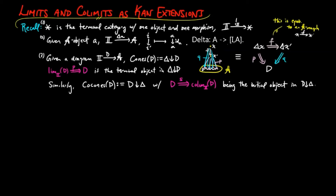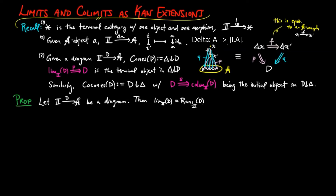We can now prove limits and co-limits are certain Kan extensions. Let d be a diagram. The limit of d is the right Kan extension of d along shriek_I, when either, and hence both, exist. And the co-limit of d is the left Kan extension of d along shriek_I, when either, and hence both, exist.